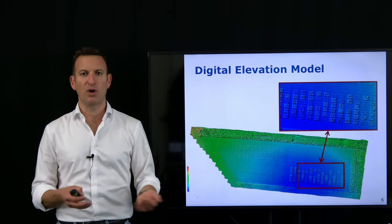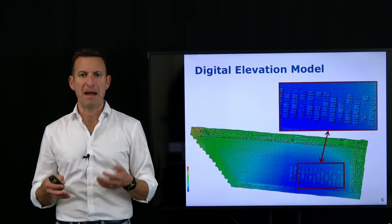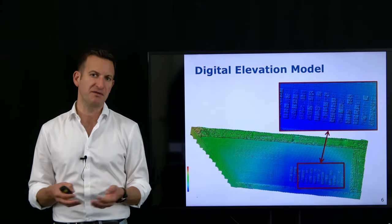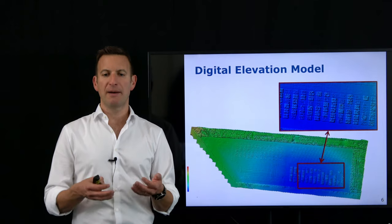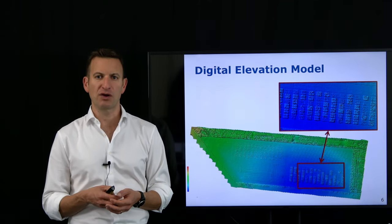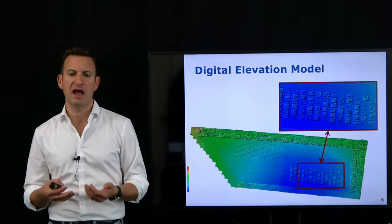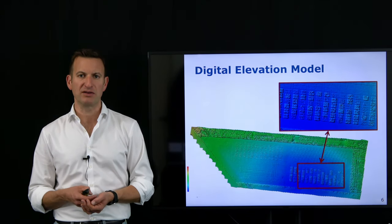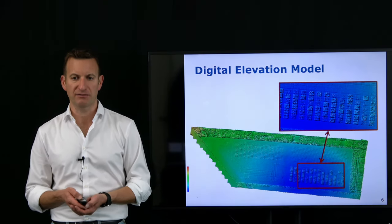This is a classical example of mapping from the air — from a UAV, an airplane, or in the old days from a balloon. But of course you can also move your camera freely through the environment and perform the 3D reconstruction task without being constrained to an aerial vehicle.